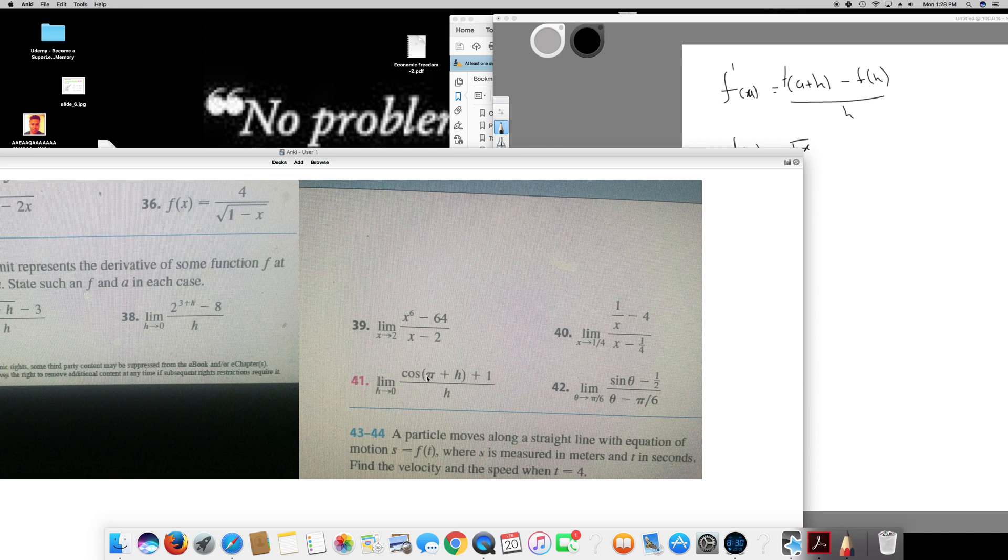And in the 41, it's going to be f of x is going to be cos phi, because it's going to be cos phi plus h. So f of x is going to be cos phi and my a is going to be this phi value, so this is going to be just phi.